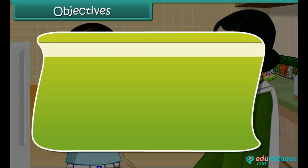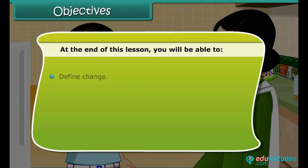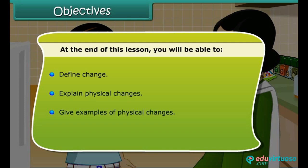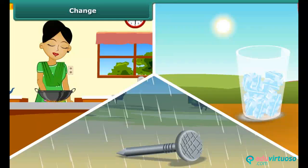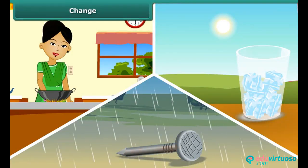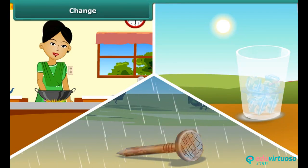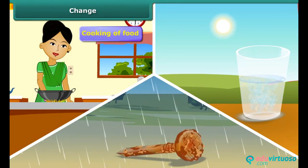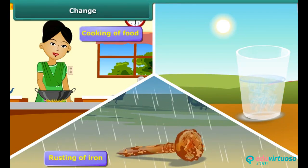At the end of this lesson you will be able to define change, explain physical changes, and give examples of physical changes. We observe many changes in our daily life. Some examples are cooking of food, rusting of iron, and melting of ice.